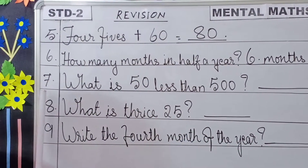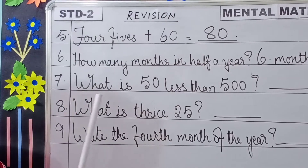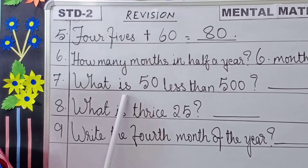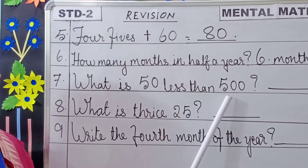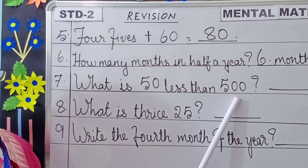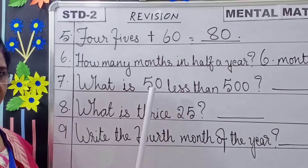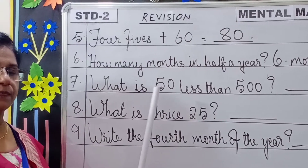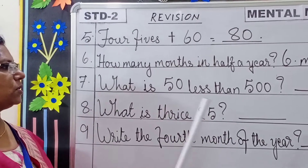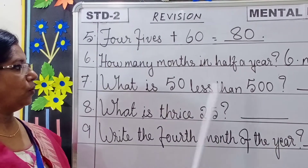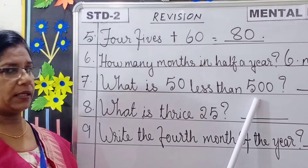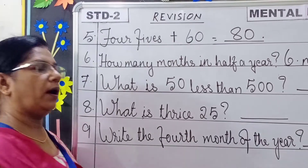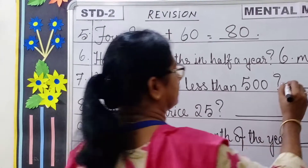Question number 7: What is 50 less than 500? Less than means subtract. So 500 subtract 50. You will get 450.